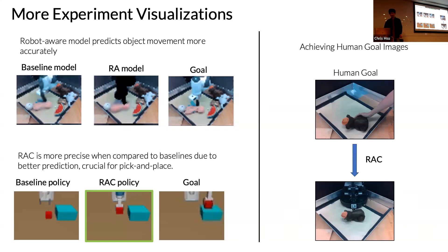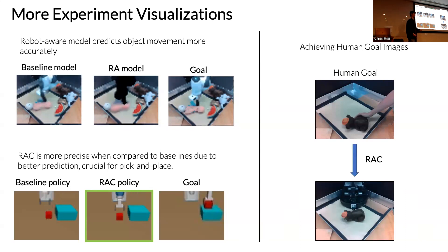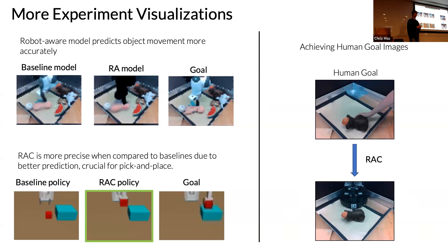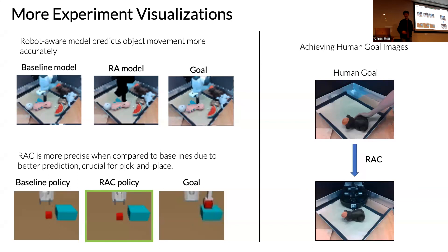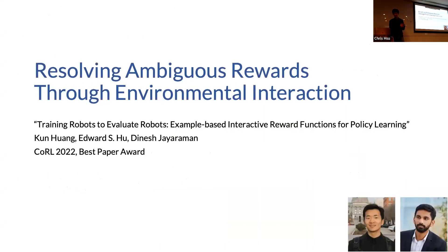One interesting twist: consider the reward function. Usually the reward function updates your policy, but you can also think of it as another form of perception — perceiving rewards. This leaves open the question: can we do things to improve our perception of the reward? This is what the next work addresses — 'Resolving Ambiguous Rewards Through Environmental Action,' with Kuan Fang and Dinesh, presented at CoRL.